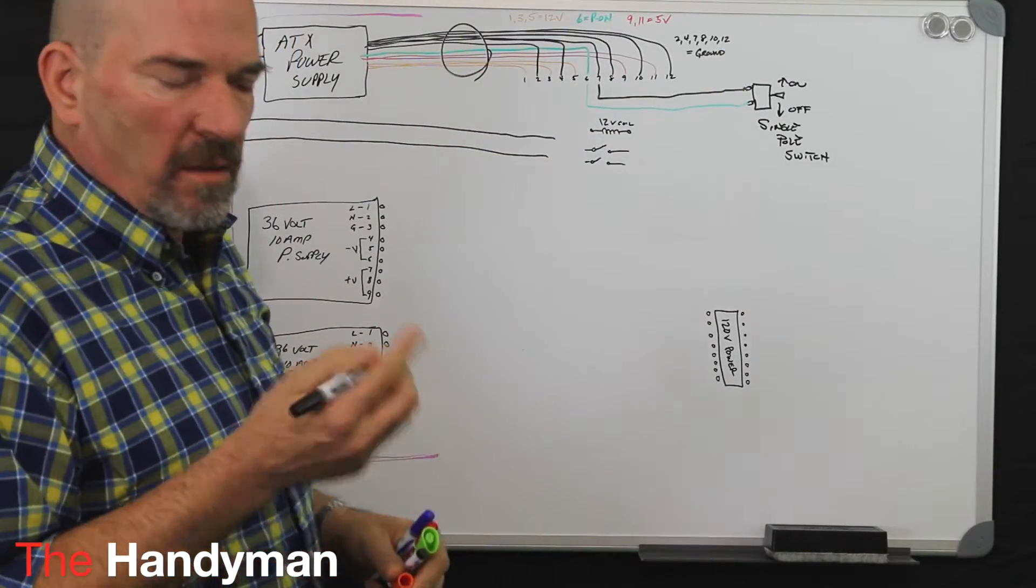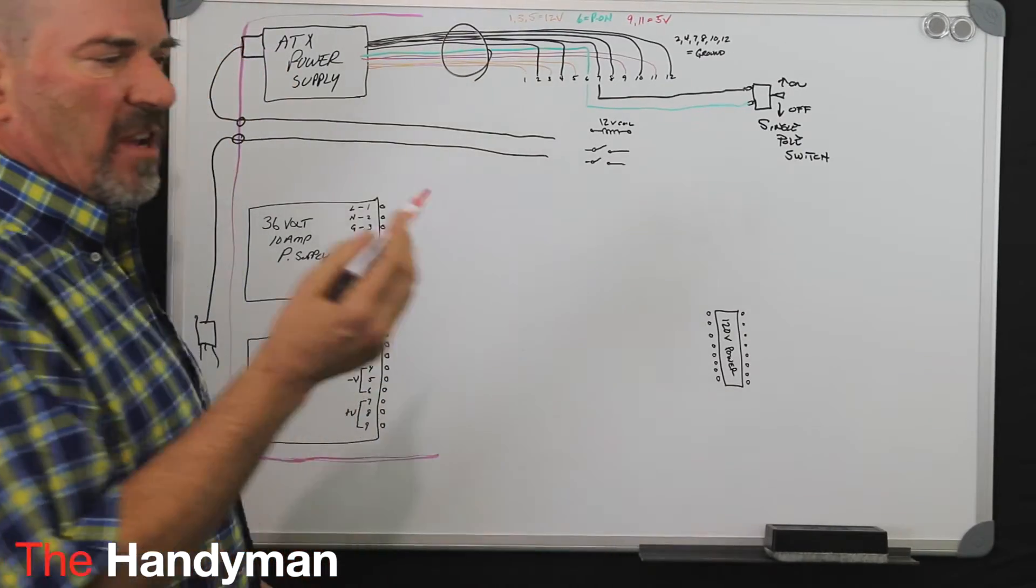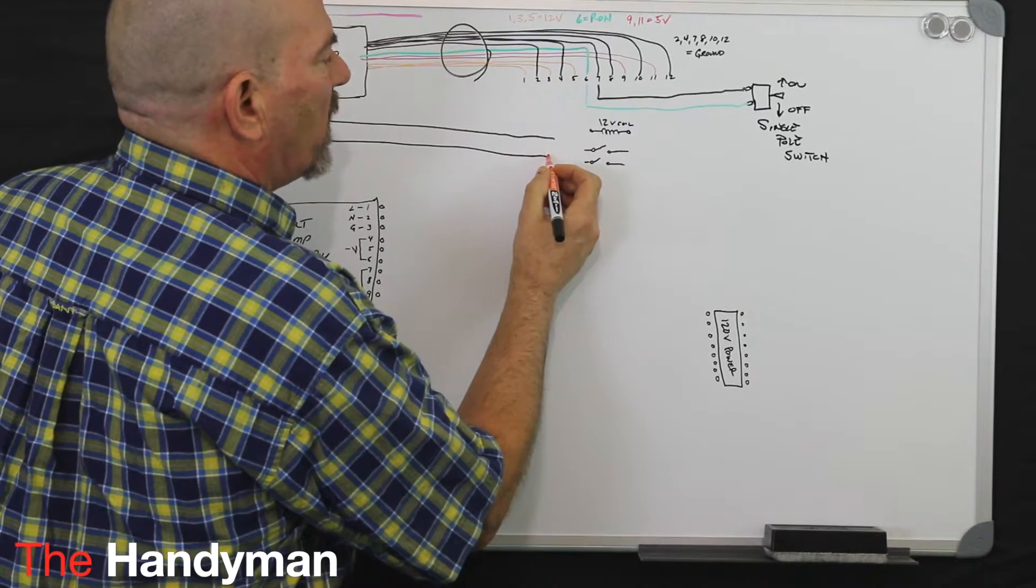So what we're going to do here is, because you can't put white on a whiteboard, we're going to represent orange as our white from this cable.